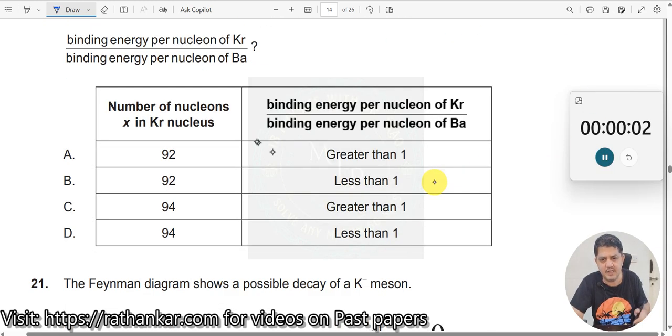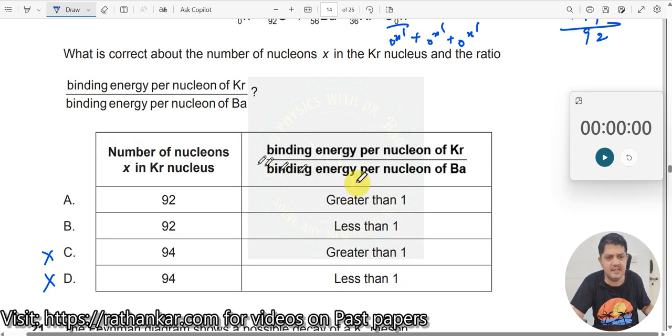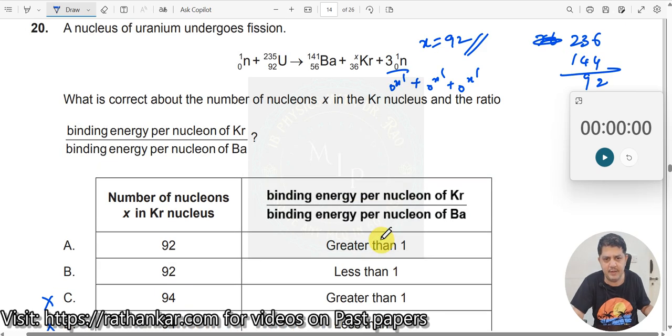Now where is 92 here? 92 is here, so definitely these two are incorrect. Then binding energy per nucleon of krypton by binding energy per nucleon of barium, how do we do this?